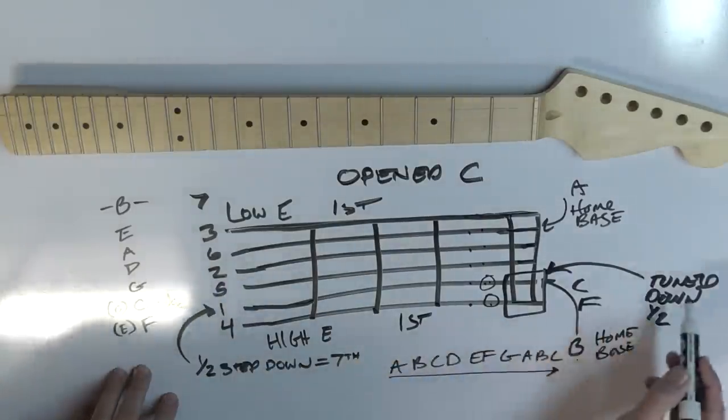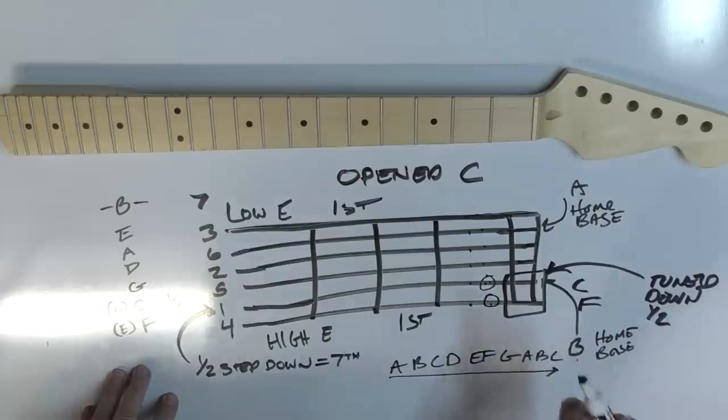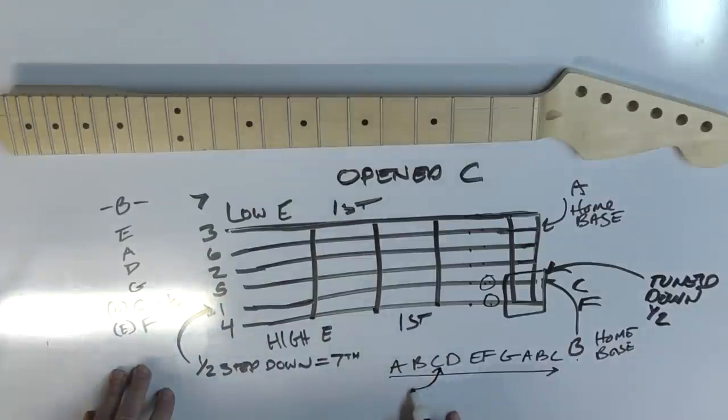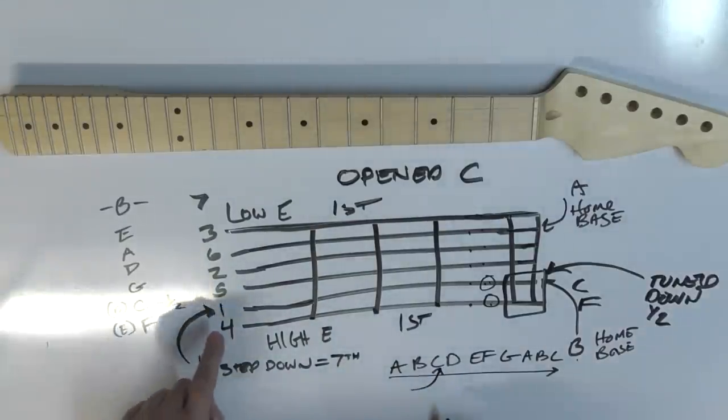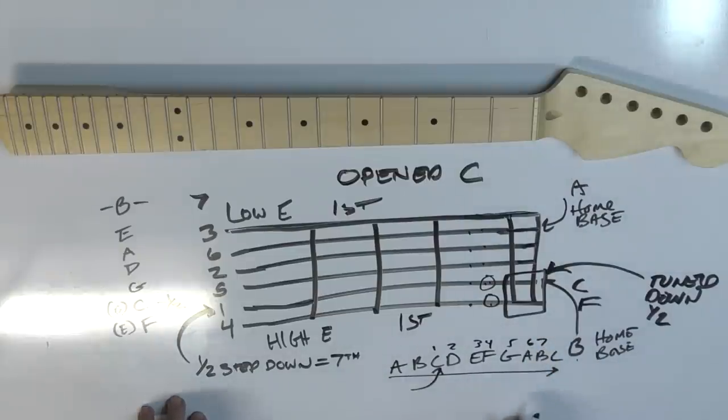Now, because the B string, which we're going to be thinking of it as a C, but the B string, that's our home base. So we're going to be starting at C, right here. We're going to be starting at C, and if we do this, that means that C is one, two, three, four, five, six, seven. That means this is your third, this is your fifth, this is your seventh.